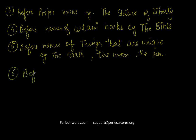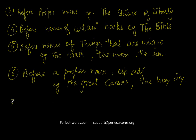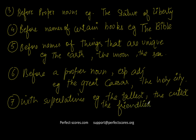The sixth case: before a proper noun, especially when it has an adjective — for example, 'the Great Caesar' or 'the Holy City'. The seventh condition is with superlatives — for example, 'the tallest boy', 'the cutest smile', 'the friendliest child', 'the most intelligent person'. When you use superlatives like cutest, friendliest, tallest, most, you have to use 'the'.